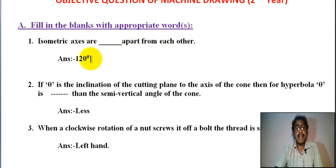Isometric axes are 120 degree apart from each other. Three axes x, y, z are mutually 120 degree apart from each other.